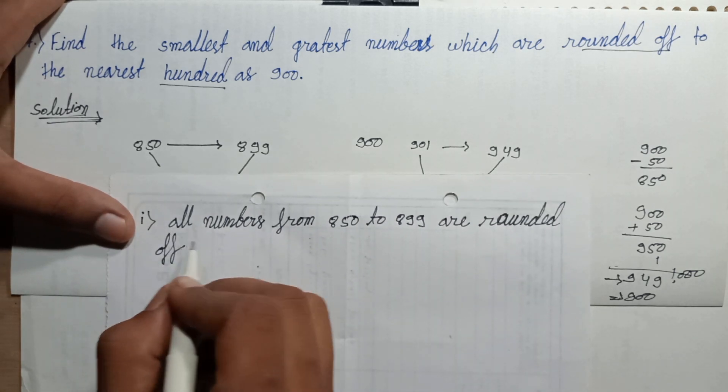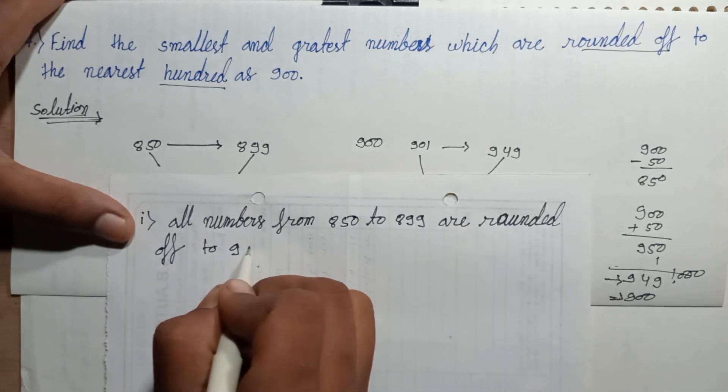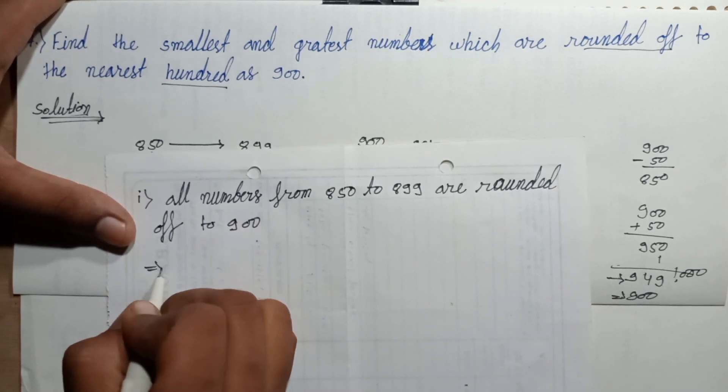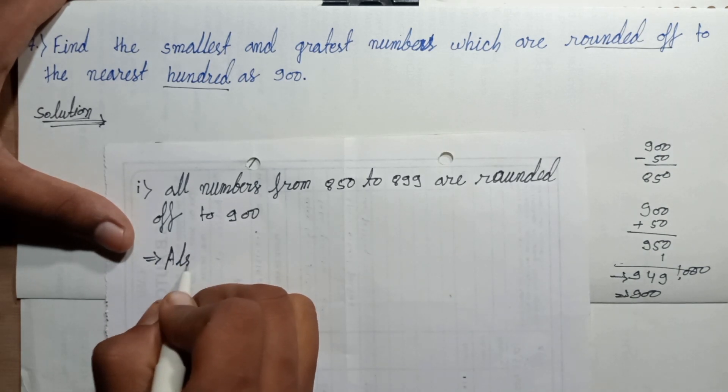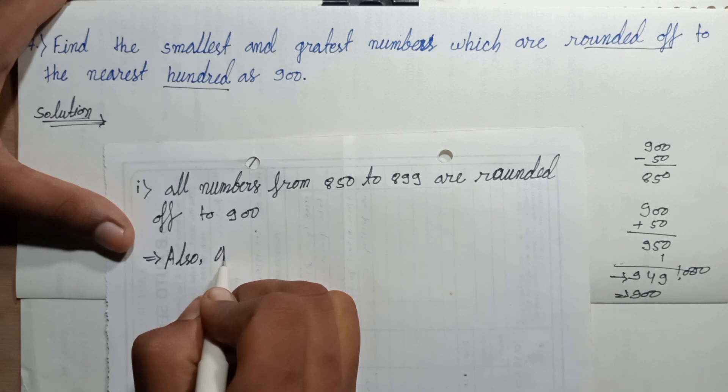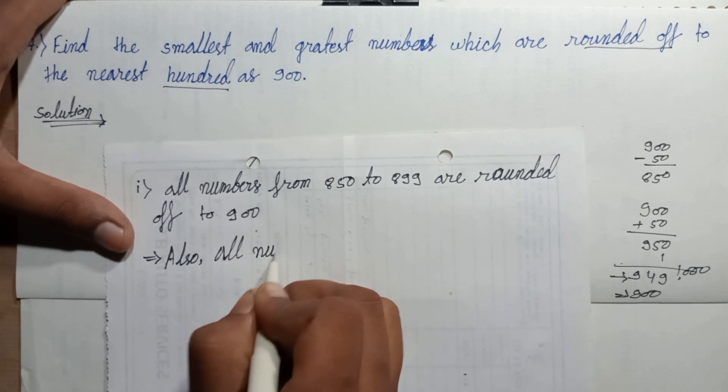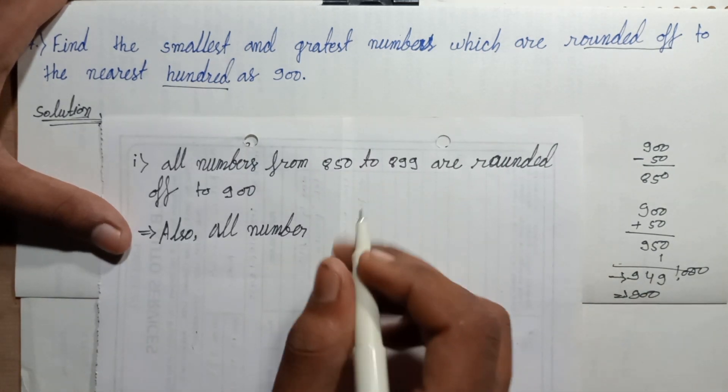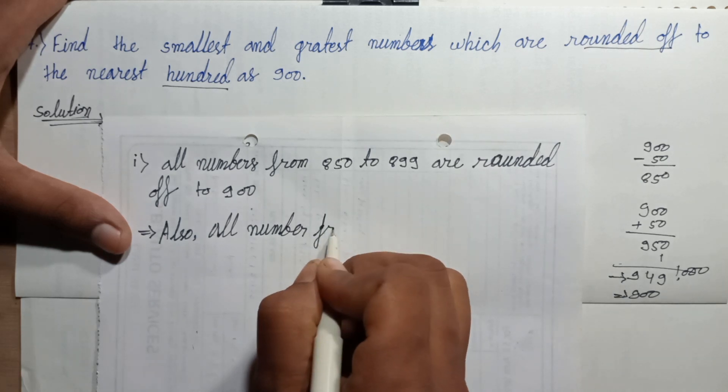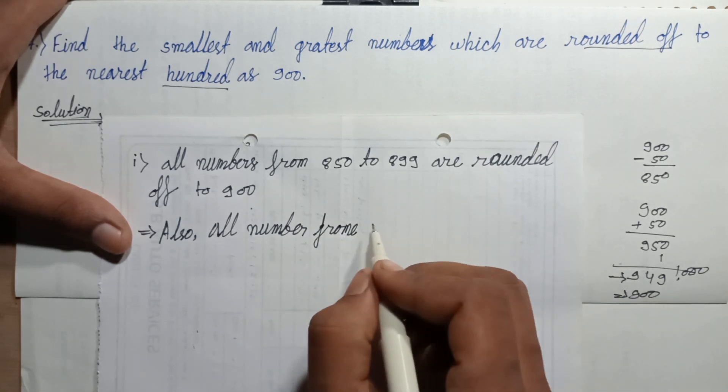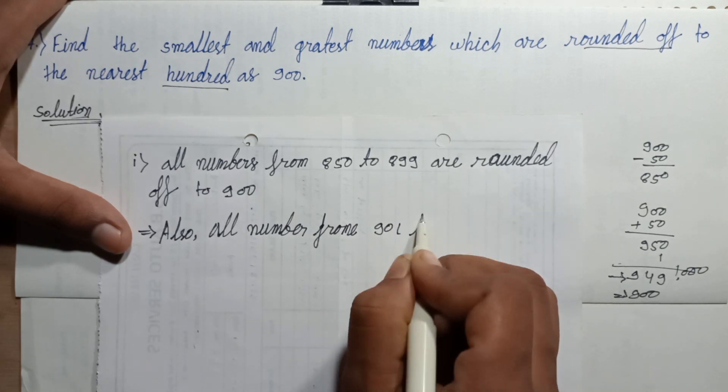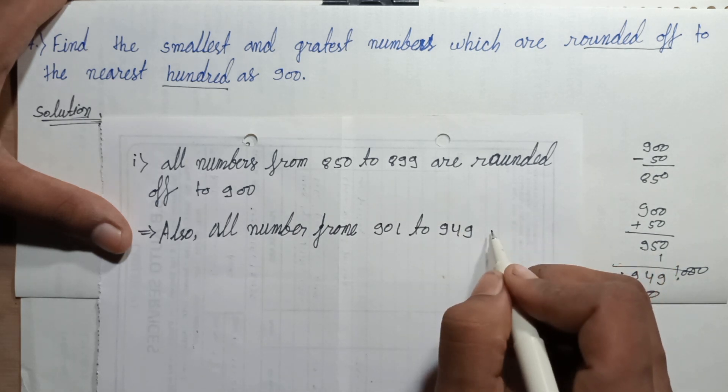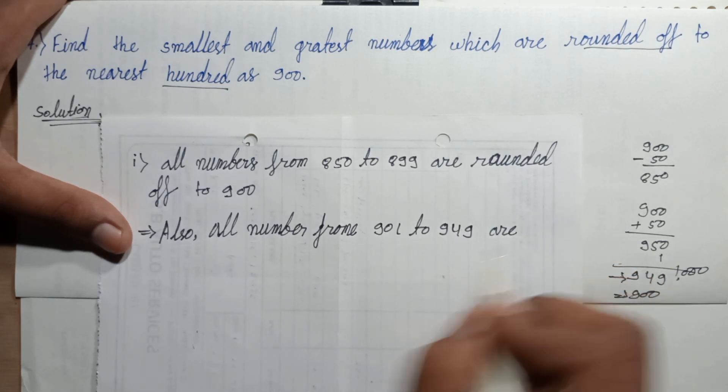Second statement: all numbers from 901 to 949 are rounded up to 900.